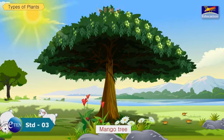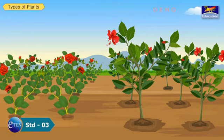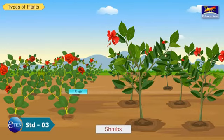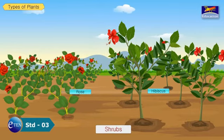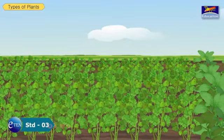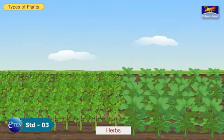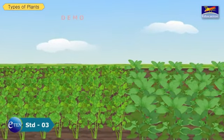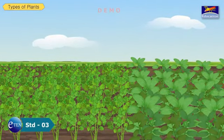A coconut tree is a very tall tree, while a mango tree has medium height. Small to medium-sized and bushy plants are called shrubs. Rose and hibiscus are shrubs. Shrubs usually live for a few years. Very small and weak plants are called herbs. Coriander and mint are herbs. They have thin, green and soft stems. They usually live for 3 to 4 months.